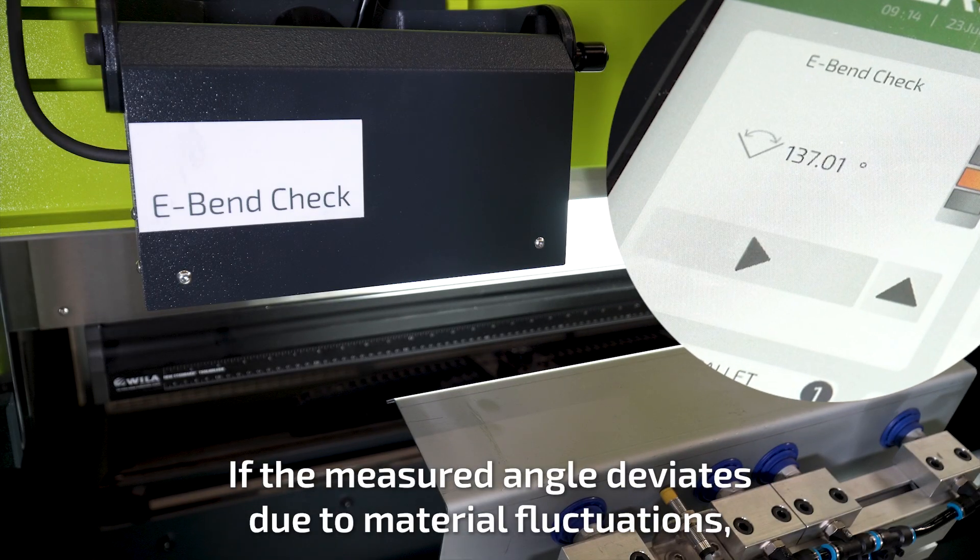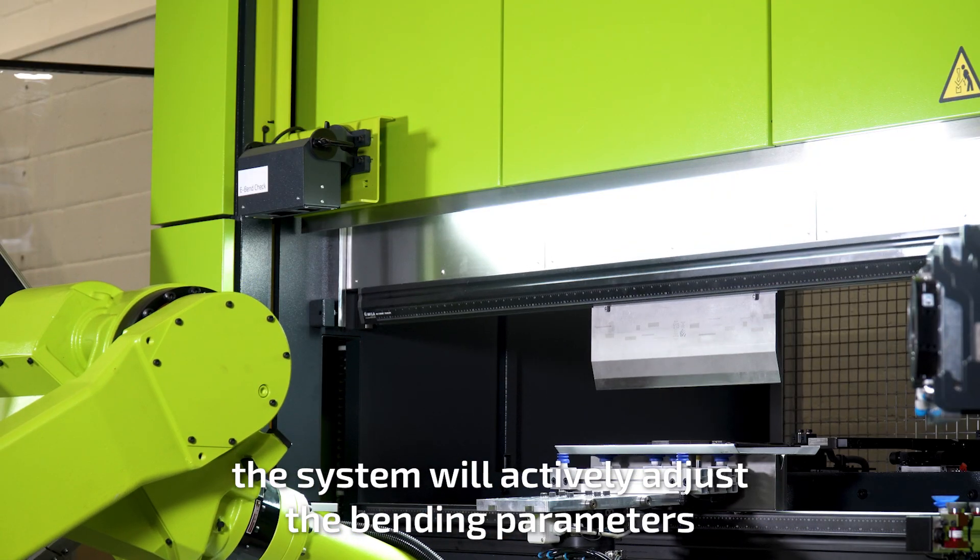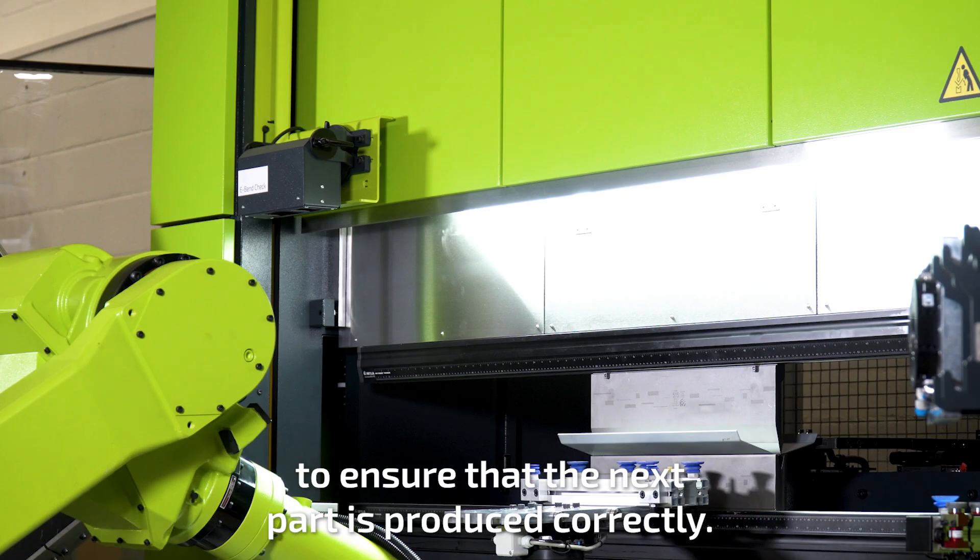If the measured angle deviates due to material fluctuations, the system will actively adjust the bending parameters to ensure that the next part is produced correctly.